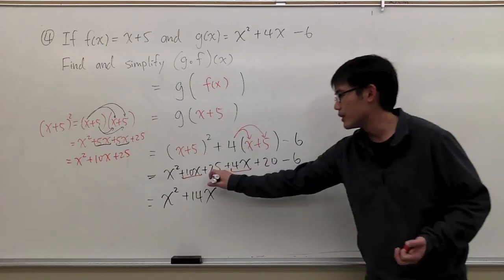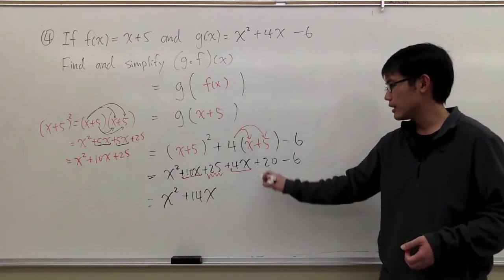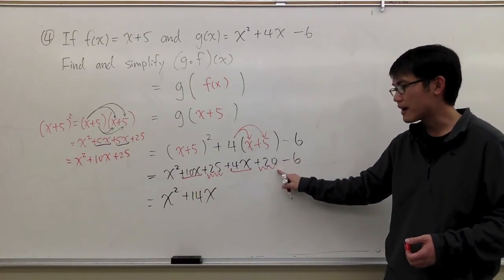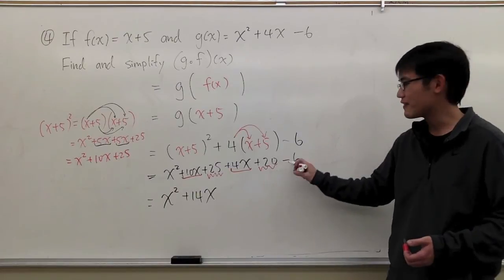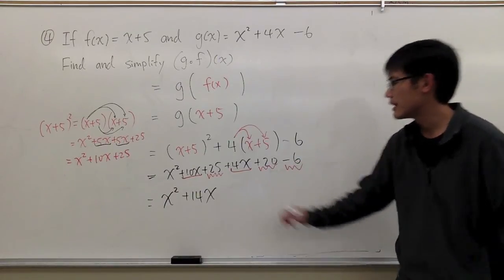And then for the numbers, we have 25 here plus 20, which will be 45. And then 45 minus 6, that will be 39.